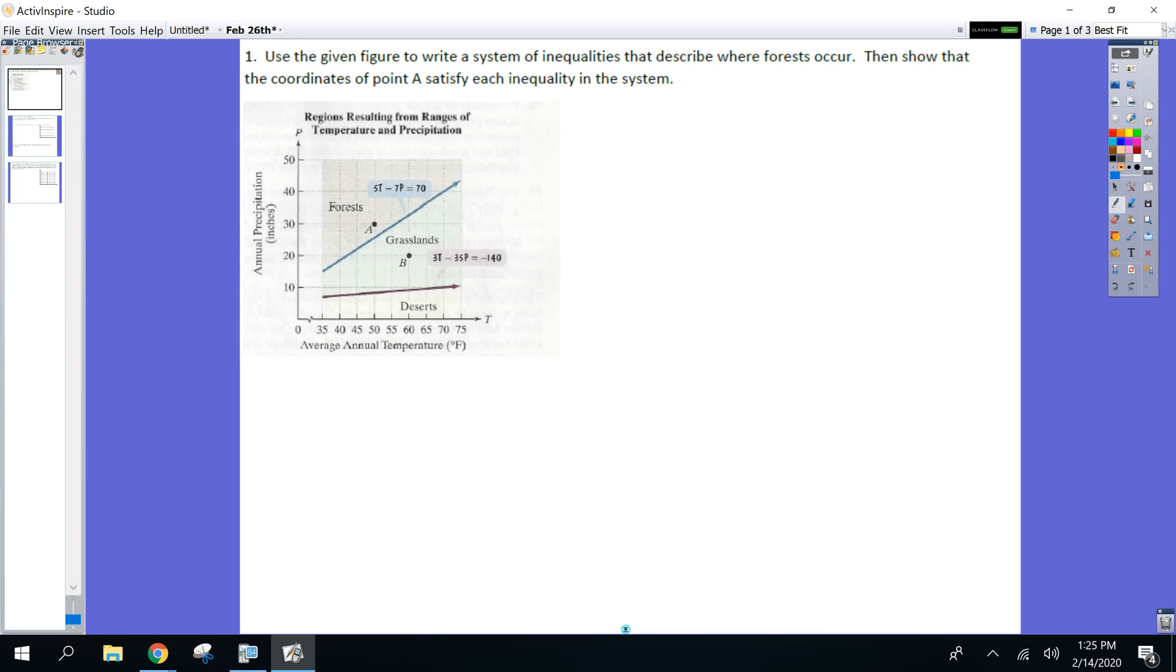Let's use this figure. We're going to write a system of inequalities, which means two or more. I need your inequalities to describe where the forest occurs. So I need you to put proper symbols so the overlapping shaded regions would overlap where the forest is. Equations with correct symbols that would say shade above, shade above, so they intersect where the forest is.